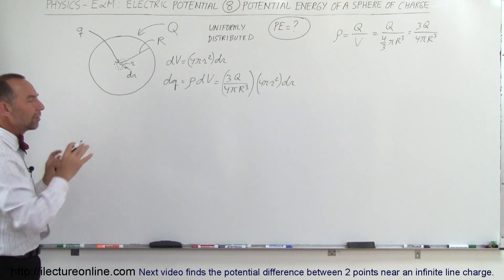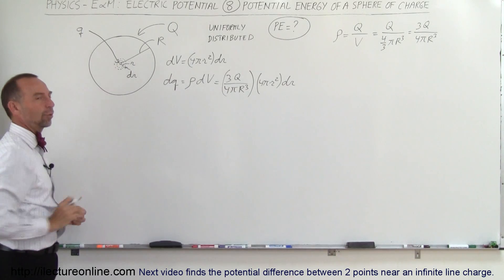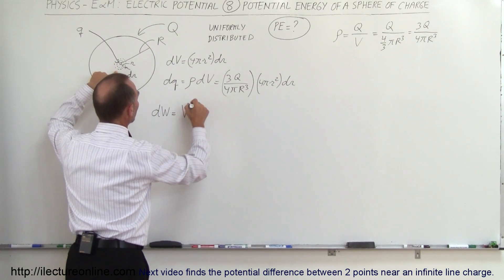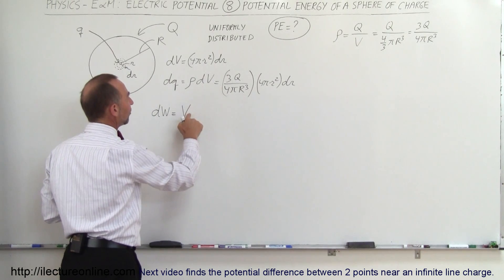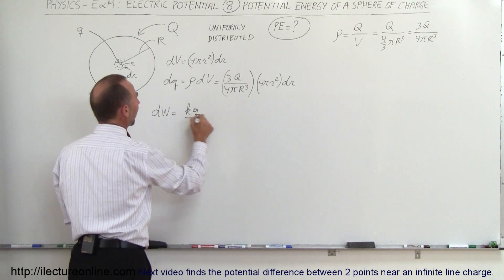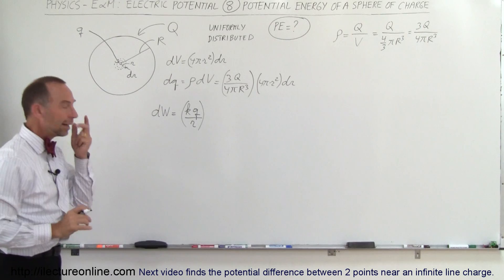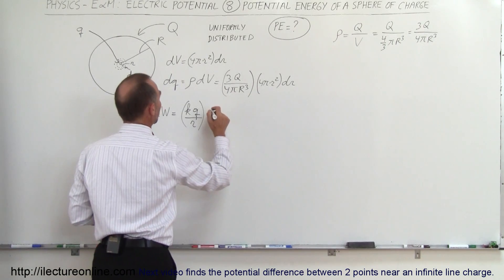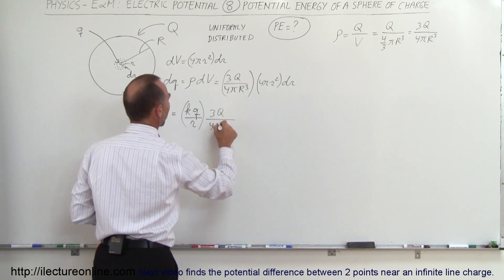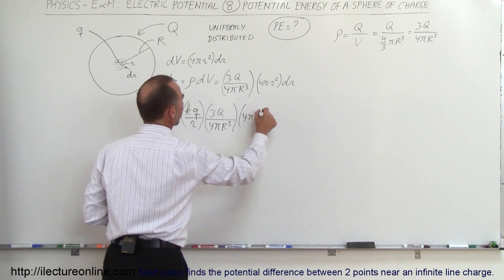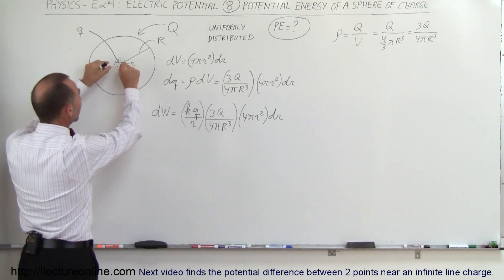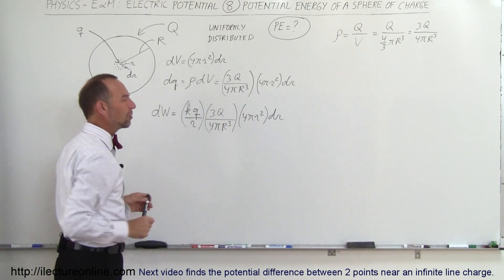Now, what is the energy required to add that shell? The small amount of work dW required to add dq to the charge q already present equals the potential created by the existing charge times the charge we're adding. That's (kq / r) times (3Q / 4πR³)(4πr² dr). Notice we have a small q and a big Q — we need to express small q in terms of the total charge.